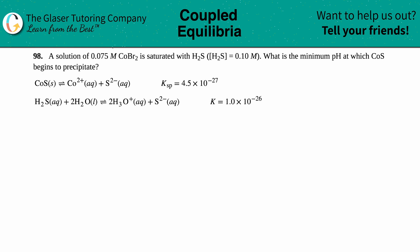Number 98: A solution of 0.075 molarity of CoBr2 is saturated with H2S, and the H2S concentration is 0.10 molarity. What is the minimum pH at which CoS begins to precipitate? They give us two equations.